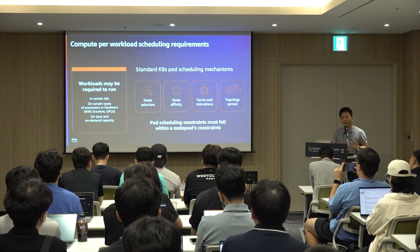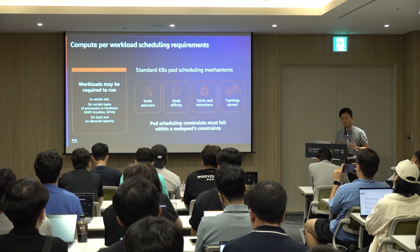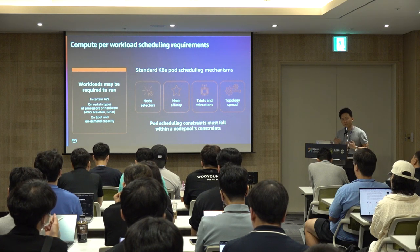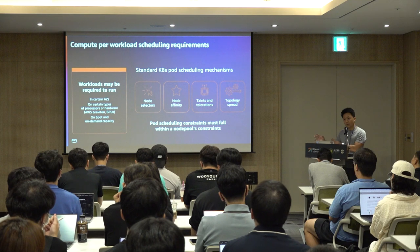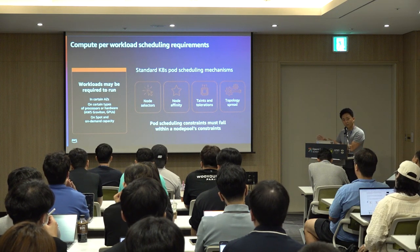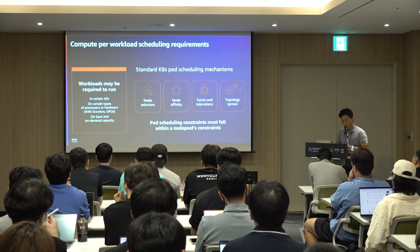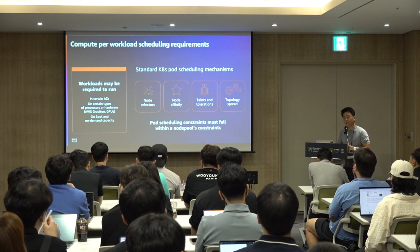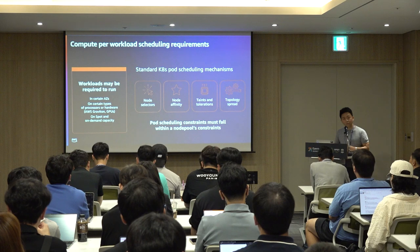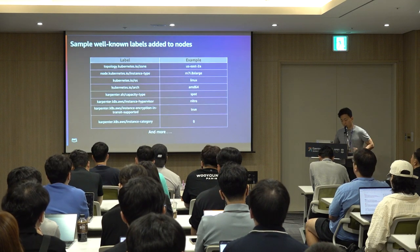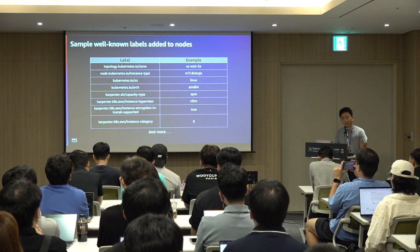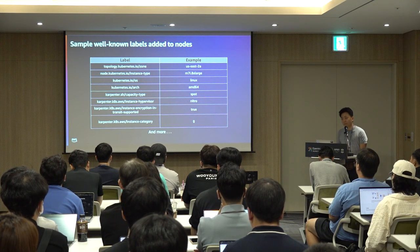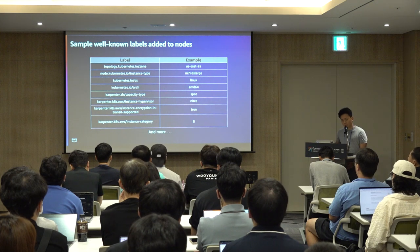You may still want to control how to schedule your pods — which AZ to deploy to, or which instance type. You can still use all Kubernetes native scheduling constraints such as node selector, taints and tolerations, node affinity, and topology spread constraints. Karpenter adds many labels automatically on provisioned nodes, and you can use those labels to control how to schedule your pods.